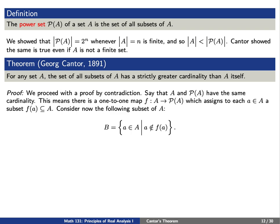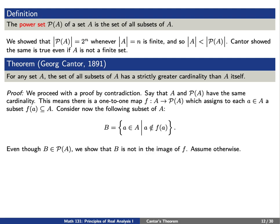Now, assuming that we do have such a one-to-one map f, let's consider the following subset of capital A. This will be the collection of elements lowercase a in capital A such that lowercase a is not contained in the set f(a). Even though B here is, by construction, a subset of A — and therefore it is in the power set of A — we're actually going to prove that B must not be in the image of our one-to-one map f. Because we want to show a contradiction, let's assume otherwise.